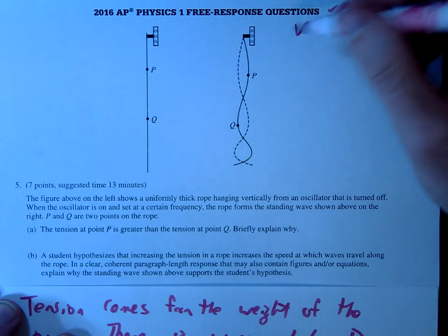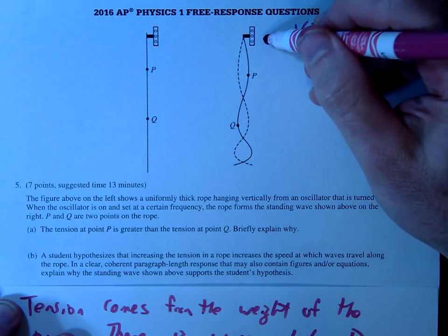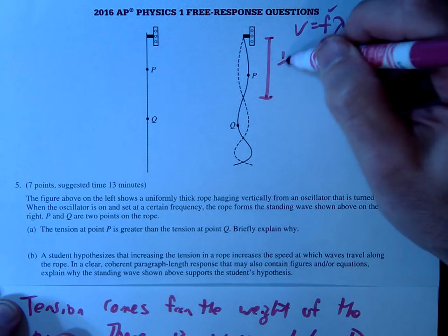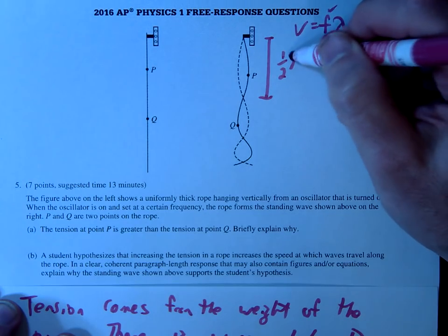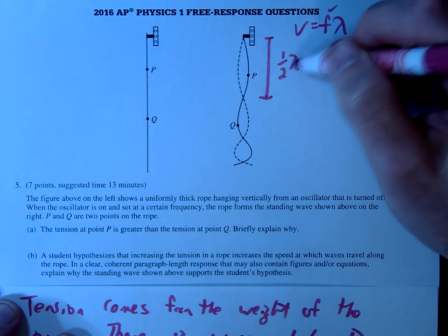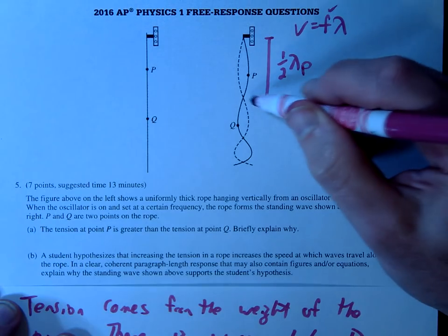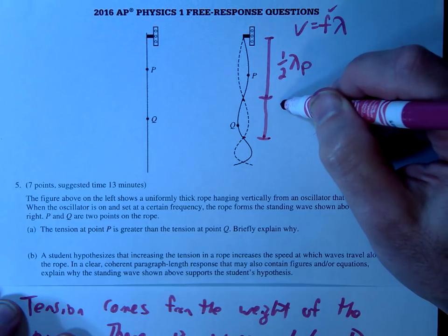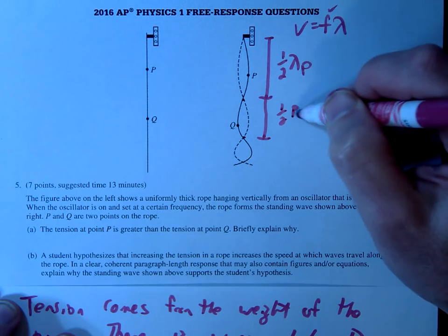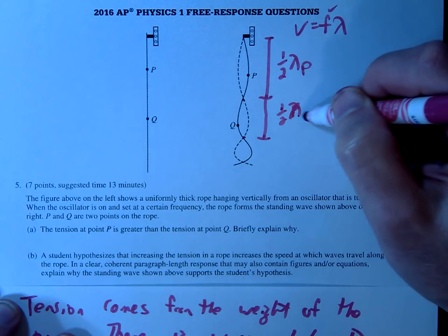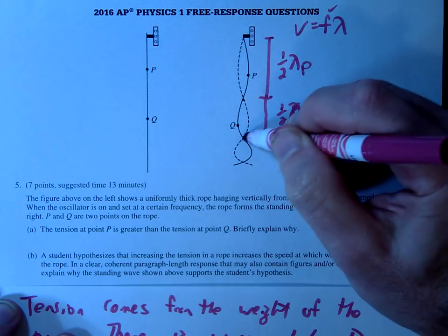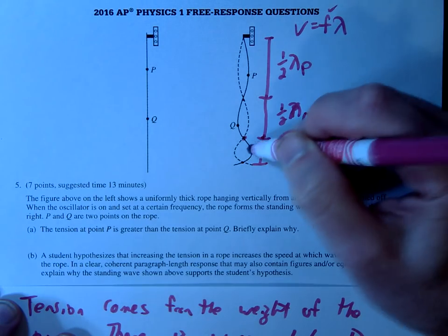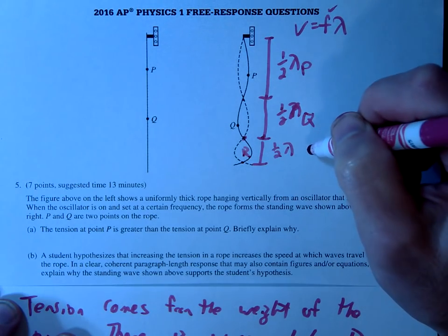So what you should notice here is that from here to here, if we go node to node, this is like half of a wavelength, right? This is like half of a wavelength. And we can call that, what, wavelength P maybe. And if we go from this node to node, we see that's half of a wavelength also, but this would be like wavelength at Q.